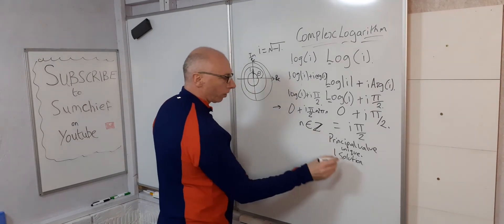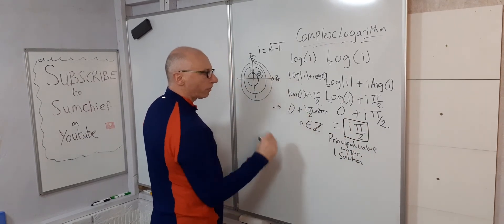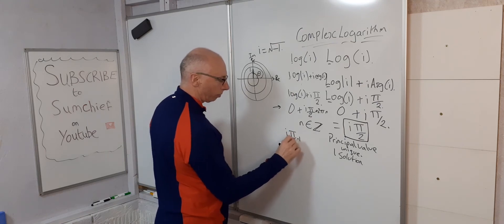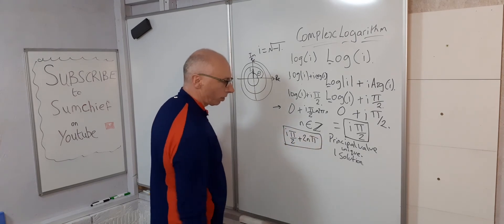So, for principal value, unique solution, i pi over 2. For infinite answers, the answer is i, pi over 2, plus 2 n pi. And that's for the infinite solutions.